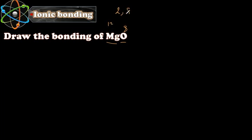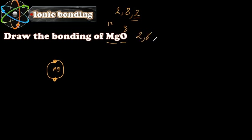Now we're going to learn how to draw ionic bonding. Draw the bonding of magnesium oxide. Magnesium has 12 protons, which means it has 12 electrons. Oxygen has 8 electrons. The electron configuration of magnesium is 2,8,2 so in the valence shell it has only two electrons. We draw only the valence electrons for the magnesium atom.